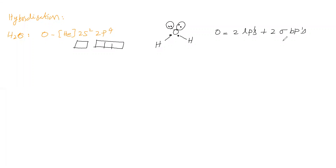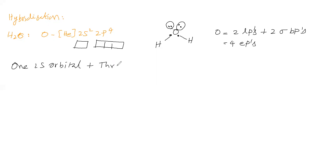Therefore, totally 4 electron pairs are there. Hybrid orbitals will hold lone pairs and hybrid orbitals will form sigma bonds. Therefore, 4 electron pairs means 4 hybrid orbitals oxygen has to provide. Therefore, oxygen provides 4 atomic orbitals for intermixing from its valency shell: 1 orbital is 2s and 3 orbitals are 2p. These 4 orbitals intermix to form hybrid orbitals.